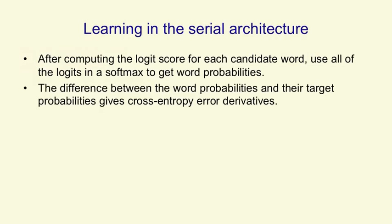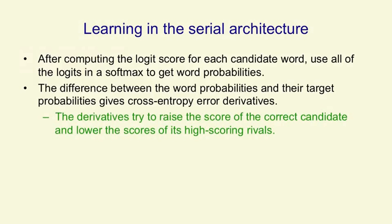Now, the difference between the word probabilities and their target probabilities, which is normally one for the correct word and zero for everything else, gives us the cross-entropy error derivatives. And we use those derivatives to change the weights in such a way that we raise the score for the correct candidate and we lower the scores for all of its high-scoring rivals.